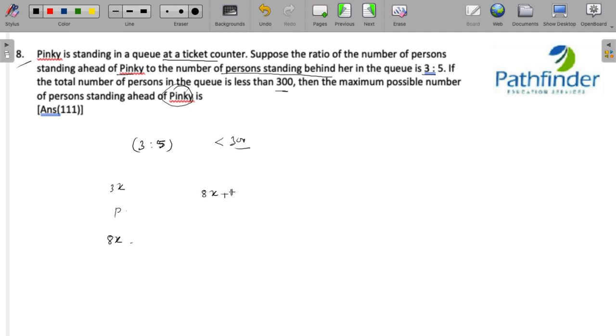What is the total number of people? 3x plus 1 plus 5x, and this should be less than 300, which means 8x should be less than 299 and x should be less than 37 point something.